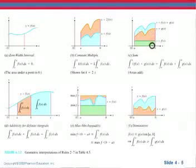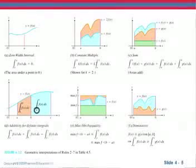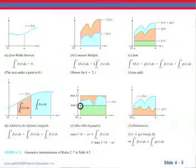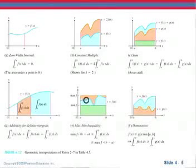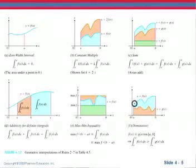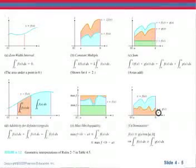So if you take the green area plus this pink area all the way down and add them together, you get the blue area all the way down. The additivity property says if I go from a to b and from b to c, then that's the same as going from a to c. The max-min inequality says if you have a minimum value of your function and you make a rectangle, that area is going to be smaller than the area actually under the curve. If I take the highest value and make a rectangle, that area is going to be larger than the actual area under the curve. And domination tells us that if f of x is greater than g of x everywhere, then the area under f of x has to be greater than the area under g of x.